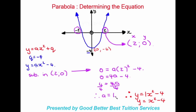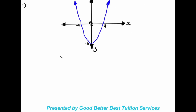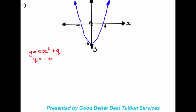Moving on to the next example. In this case we're given a parabola — clearly it's a smiley face, so we know a is going to be positive. The turning point given to us is negative sixteen. We write our equation: y is equal to ax squared plus q, and we find q is equal to negative sixteen. So our equation is y equals ax squared minus sixteen.